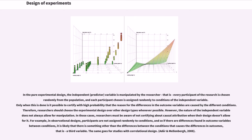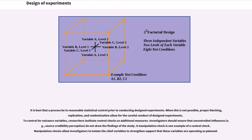However, the nature of the independent variable does not always allow for manipulation. In those cases, researchers must be aware of not certifying about causal attribution when their design doesn't allow for it. For example, in observational designs, participants are not assigned randomly to conditions, and so if there are differences found in outcome variables between conditions, it is likely that there is something other than the differences between the conditions that causes the differences in outcomes, that is, a third variable. The same goes for studies with correlational design. Adèr and Mellenbergh, 2008. It is best that a process be in reasonable statistical control prior to conducting designed experiments.